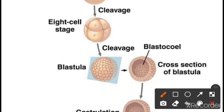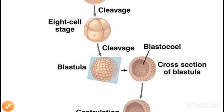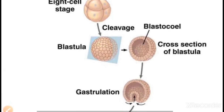The next stage is blastula. Blastula is the hollow ball of cells. As you can see in the cross-section of blastula, there is a hollow cavity in between the cells, and this cavity is called the blastocoel.